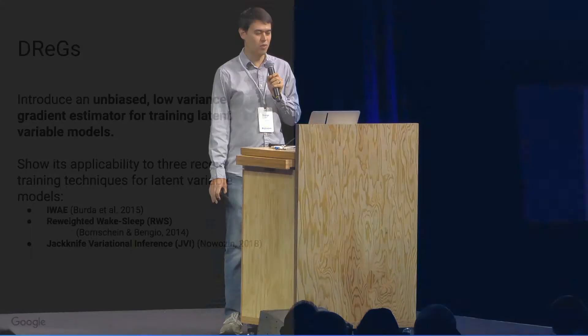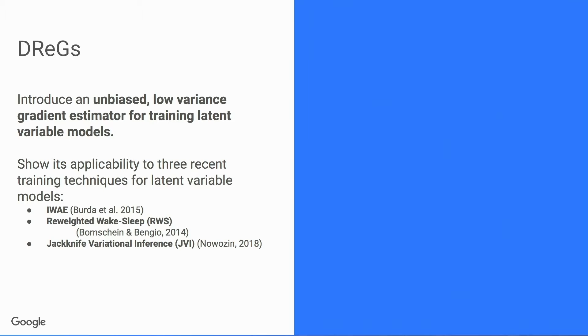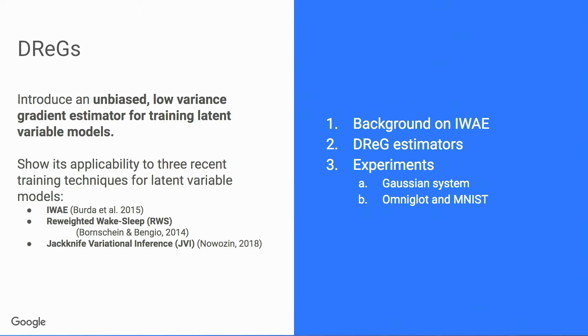In this work, we introduce an unbiased, low-variance gradient estimator for training latent variable models. We show its applicability to three recent training techniques: IWAE, which I'll talk about at length, re-weighted wake-sleep, and jackknife variational inference. I'll start with background on variational autoencoders and IWAE, then explain how doubly reparameterized gradient estimators work, and show experiments on a simple Gaussian system and on Omniglot and MNIST datasets.